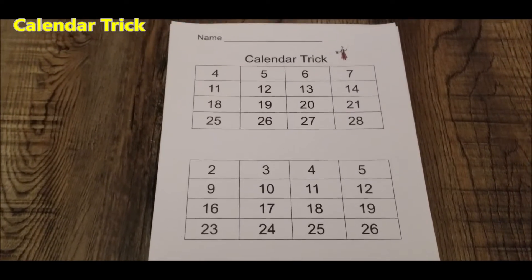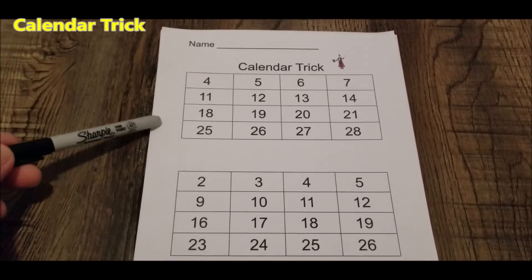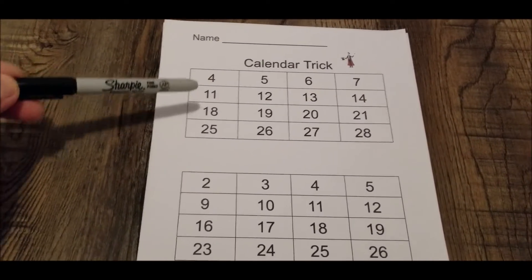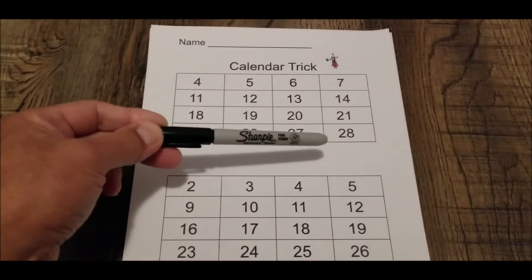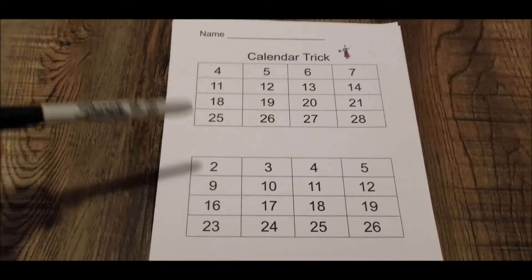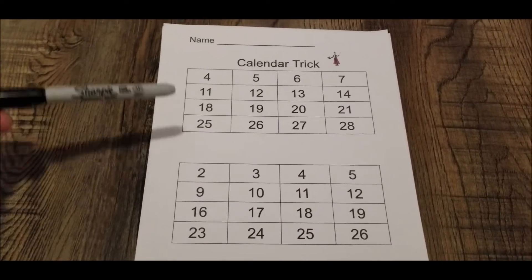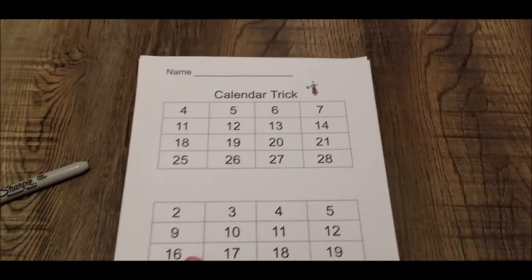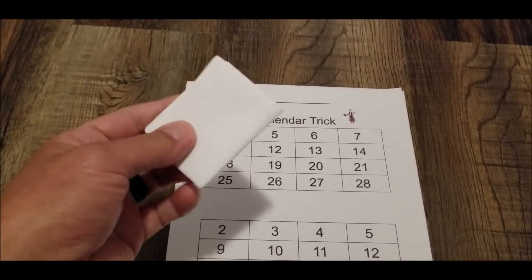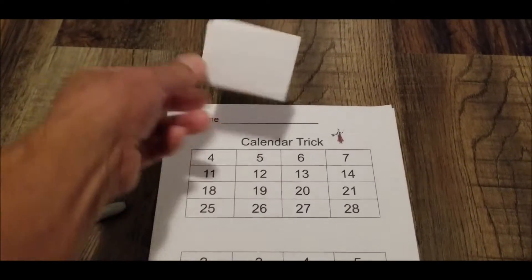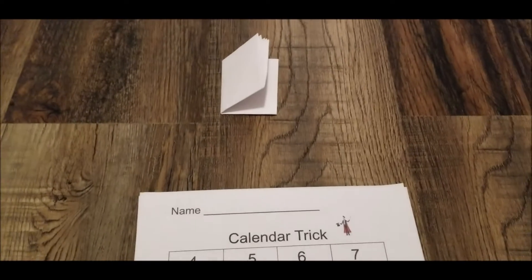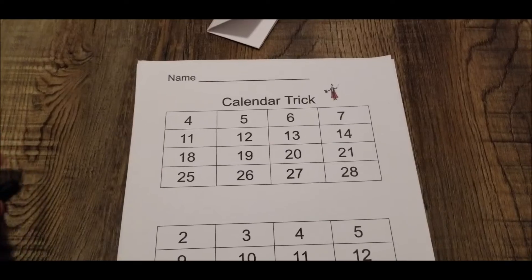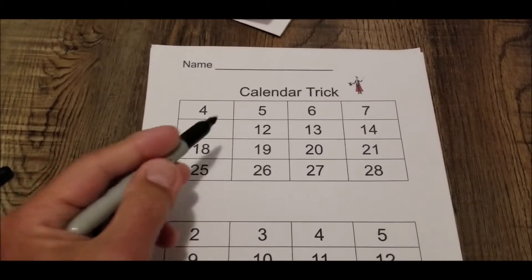The first one is called the calendar trick and I have two different ones. This works on any calendar as long as you have four numbers down and four numbers across like you would in a regular calendar. So I did two different ones. If you check the description, you'll be able to get to the link to be able to print this out. So here's the cool part. Here is the answer. And I have read your mind and I'm going to leave it right there.